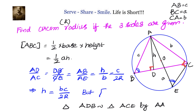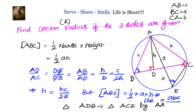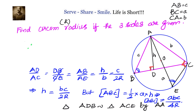Now, since area of triangle ABC = ½ × a × h, substituting h = bc / 2R gives: area = ½ × a × (bc / 2R) = abc / 4R. Therefore, the circumradius R = abc / (4 × area of triangle).